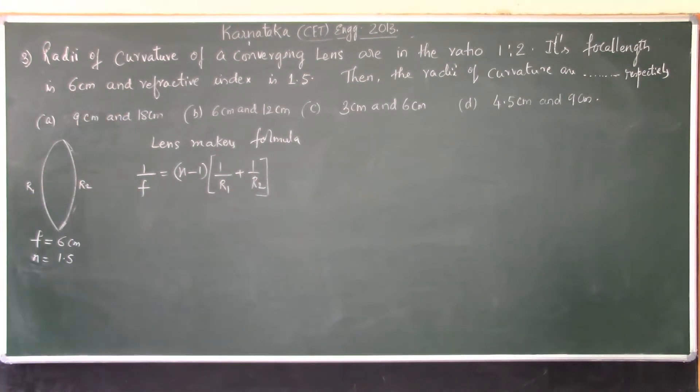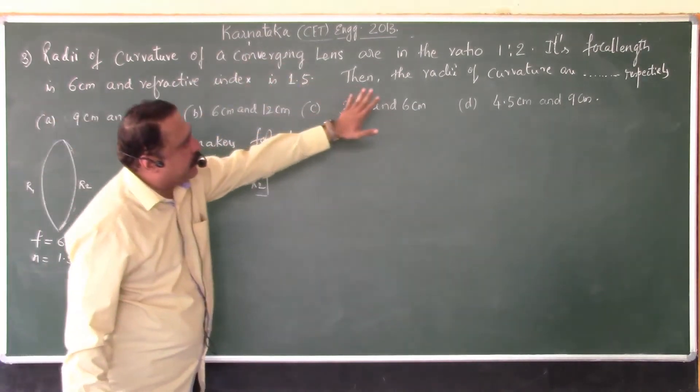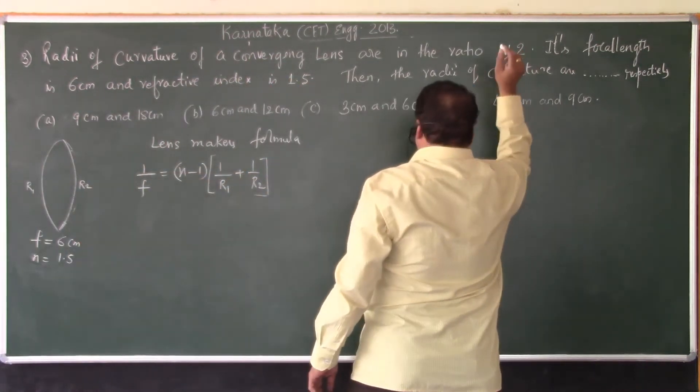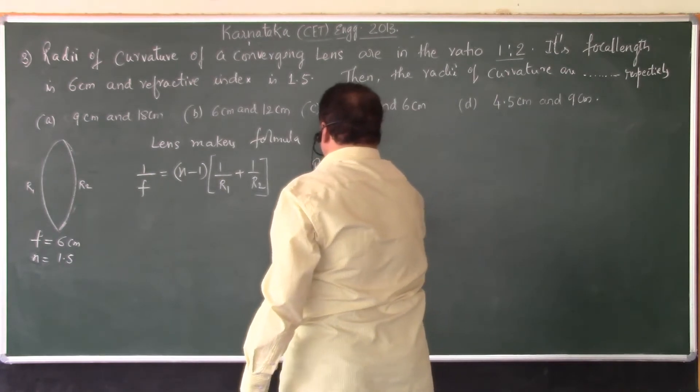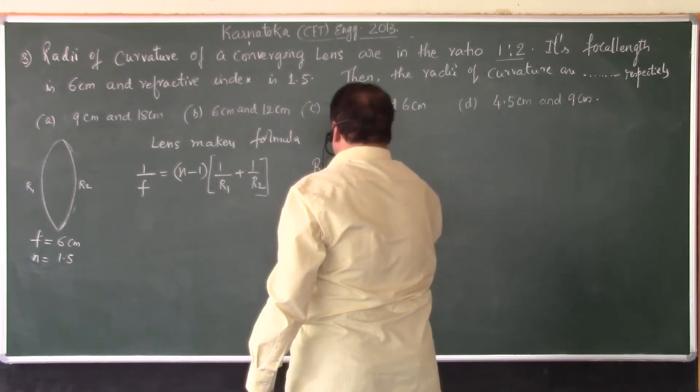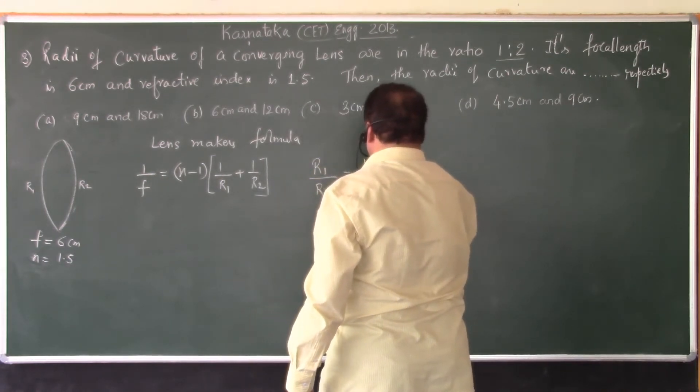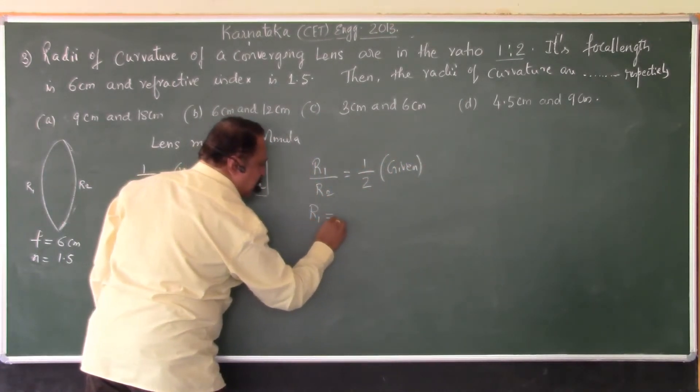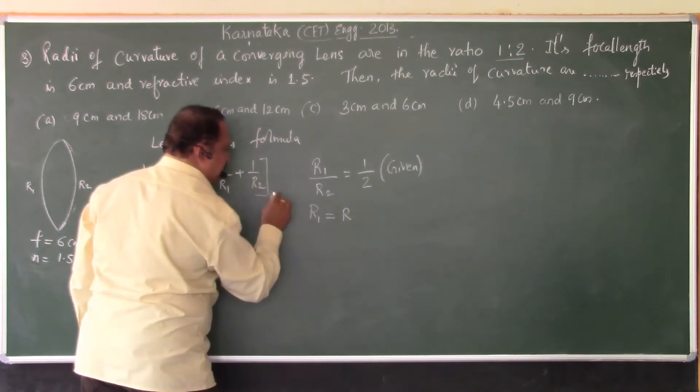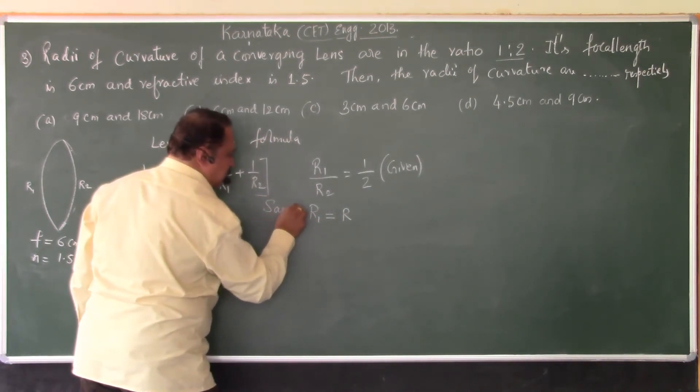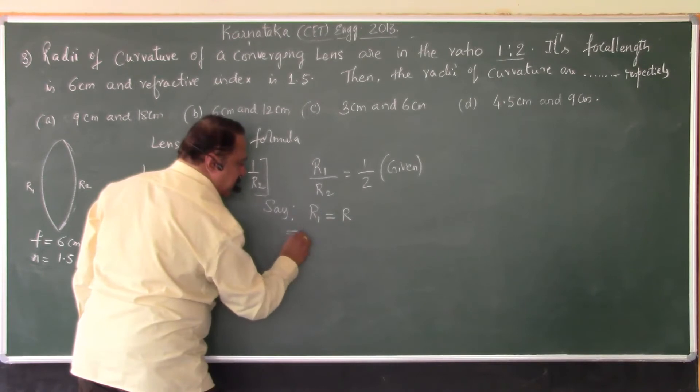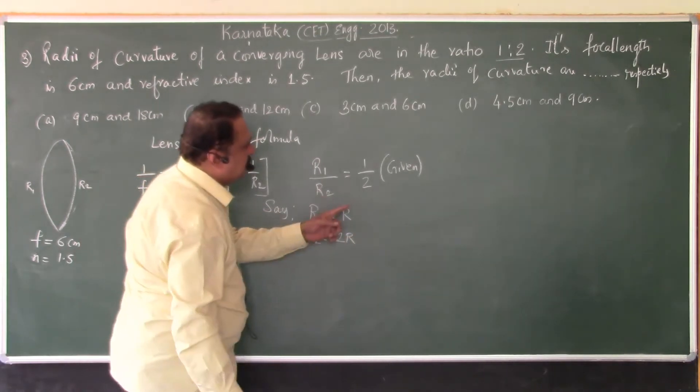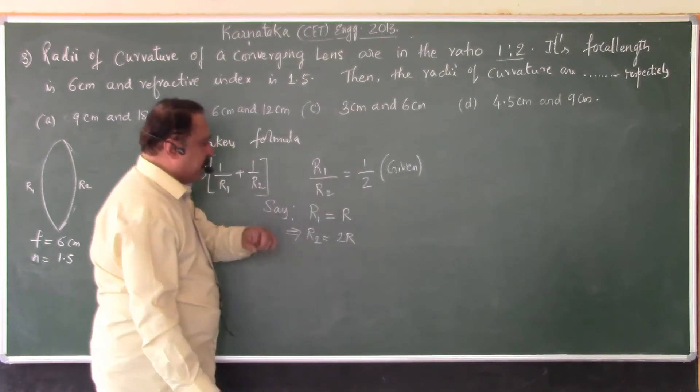Now, here the radii of curvature of a converging lens are set to be in the ratio 1 is to 2. It is given that the ratio of R1 is to R2, R1 by R2 is 1 by 2. Now, if you regard R1 as R, let us say R1 as R, then it implies R2 should be equal to 2 times of R, because R1 by R2 is 1 by 2.